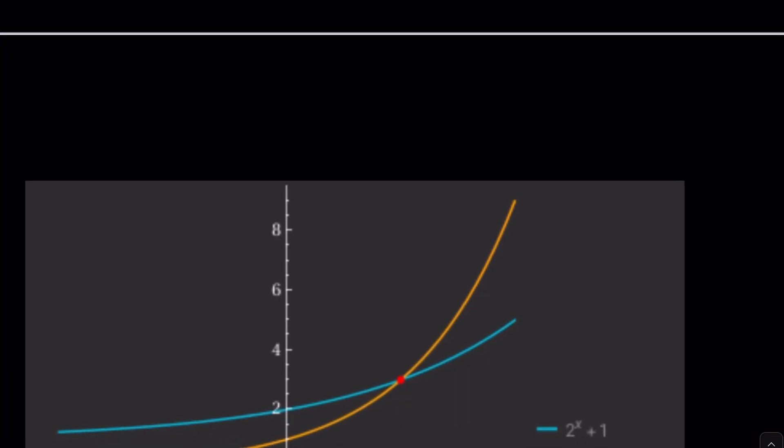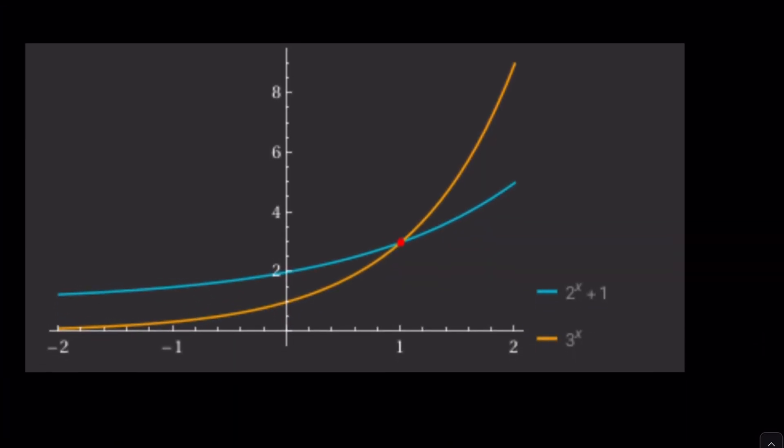Now, let's take a look at what Wolfram Alpha gives us. It gives us a graph of these two functions, 2 to the x plus 1 and 3 to the power x. As you can see, first, 2 to the x plus 1 starts higher because of the addition of 1. It's a vertical shift. But, then, 3 to the x catches up because it's a bigger base. And, then, they intersect at x equals 1. And, then, 3 to the x is just gone crazy. Make sense?